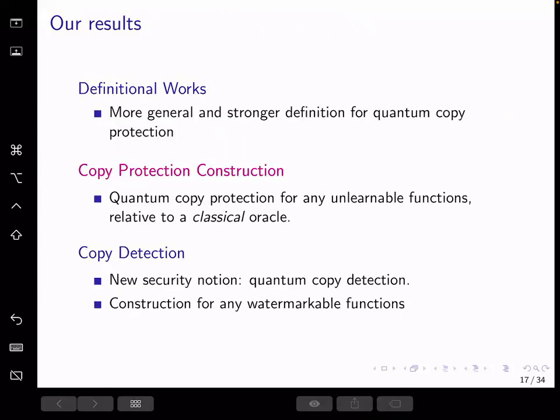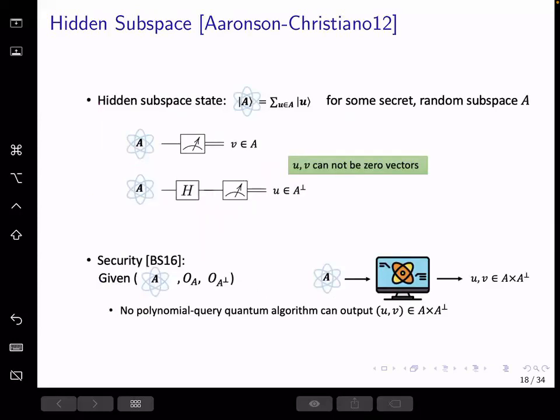And next comes to our result for construction. We give a construction to copy-protect any unlearnable functions using a classical oracle. So our overall high-level idea is inspired by hidden subspace from Arison Christiano's public key quantum money scheme in 2012. A hidden subspace A is a secret subspace randomly chosen by the challenger. It has exponentially many elements, but still exponentially small compared to the full space, which is, for example, an n-dimensional vector space over the finite field of 2.